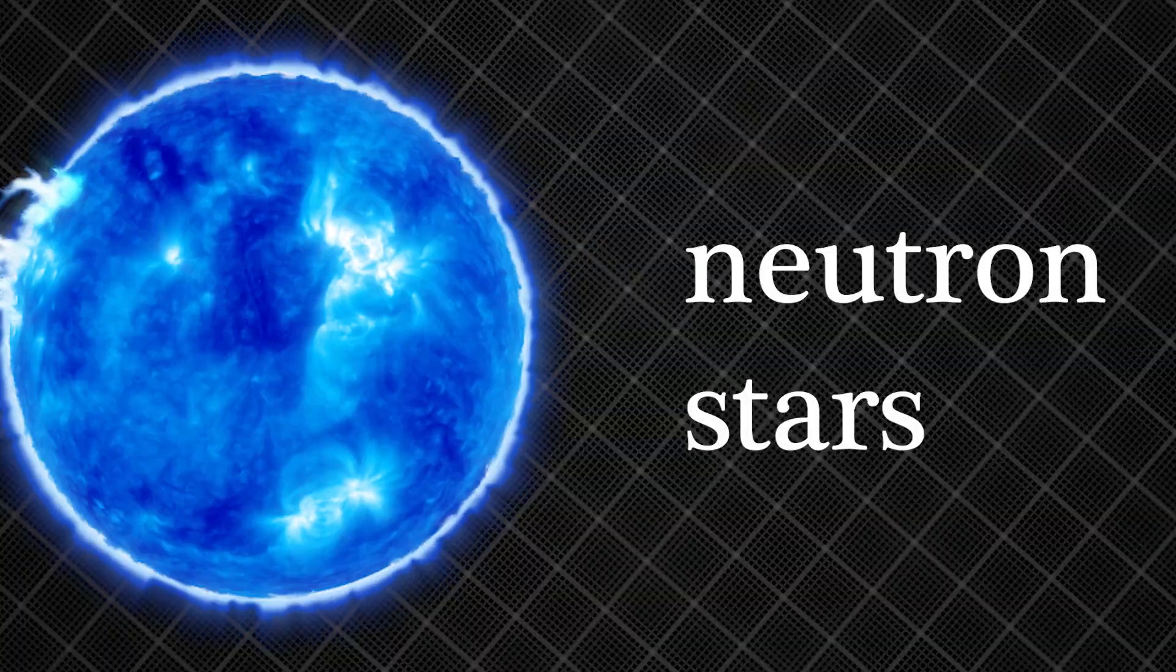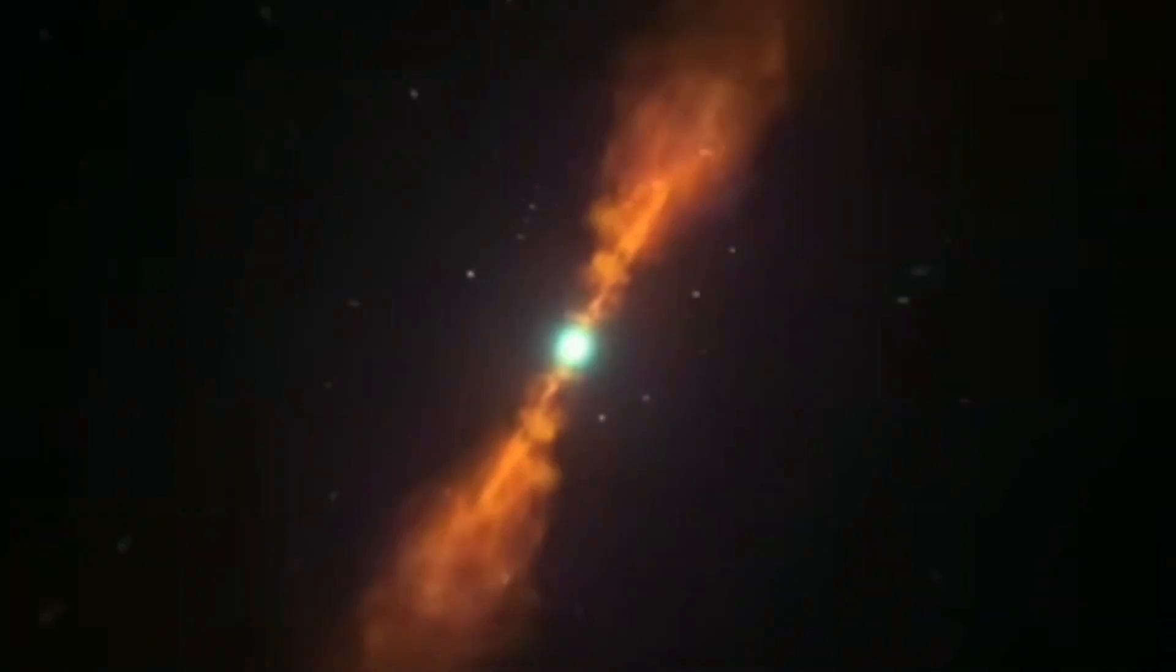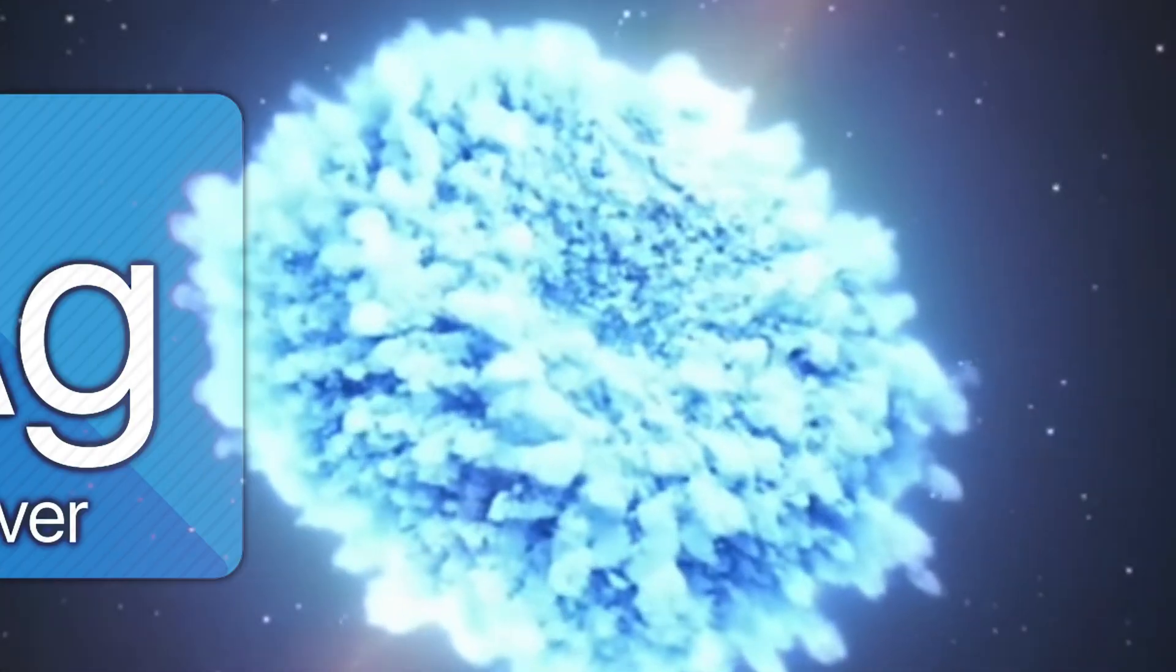Another way heavy elements are made is when two neutron stars collide. Neutron stars are the incredibly dense remnants of stars that explode in a supernova. When they merge, they release massive amounts of energy, producing and spreading some of the rarest and heaviest elements, such as silver and palladium.